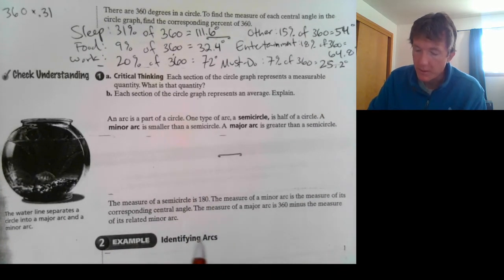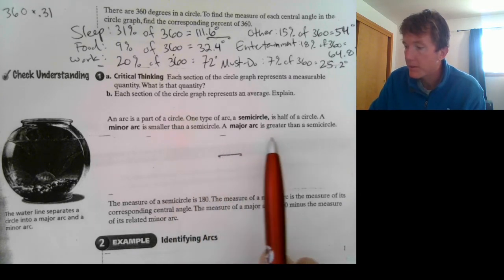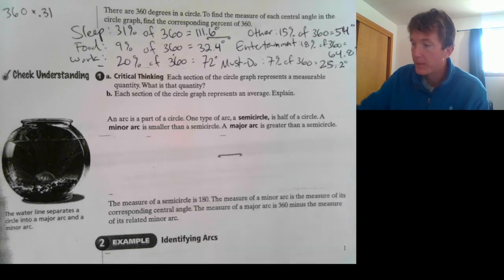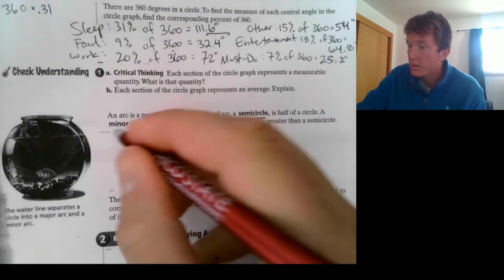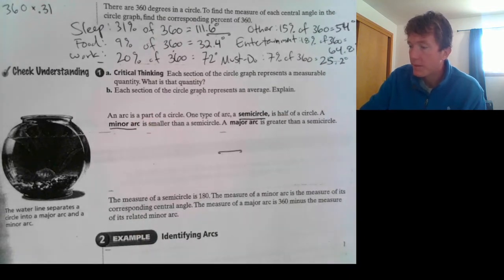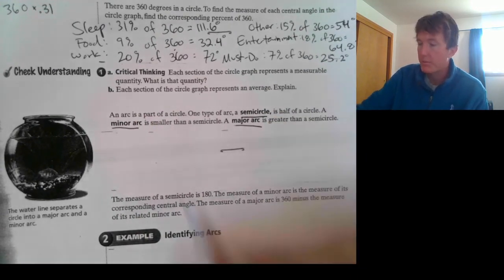Alright, next part. An arc is a part of a circle. One type of arc, a semicircle, is half of a circle. So, that's a semicircle. A minor arc is smaller than a semicircle. And a major arc is greater than a semicircle.